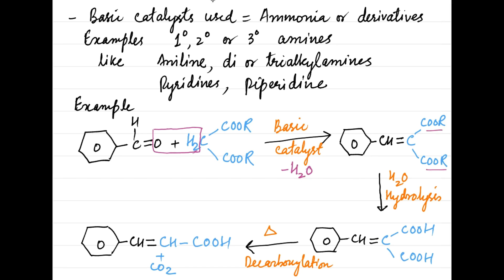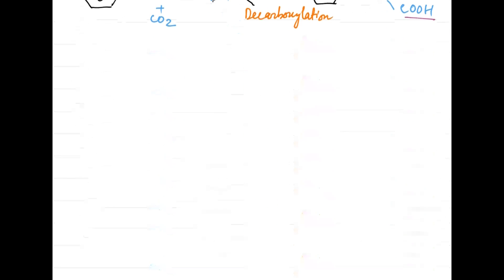Overall, in the presence of basic catalysts, during condensation a water molecule is lost to form an alpha-beta unsaturated dicarbonyl compound, which is subjected to hydrolysis so that ester groups are hydrolyzed to acid groups, forming a 1,3-dicarboxylic acid. This upon heating loses a carbon dioxide molecule to form an alpha-beta unsaturated acid.